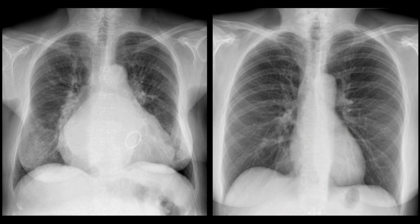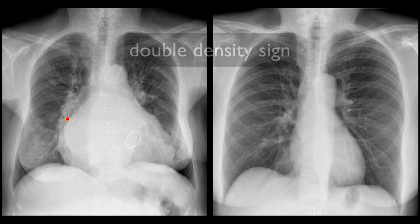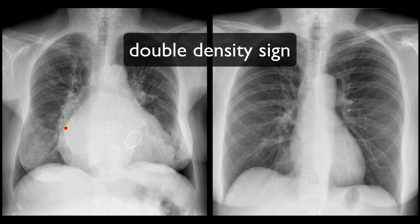However, when the atrium becomes enlarged, its right aspect may become directly visible as an extra shadow paralleling the right heart border. This is known as the double density sign, or the double right heart border sign of left atrial enlargement.